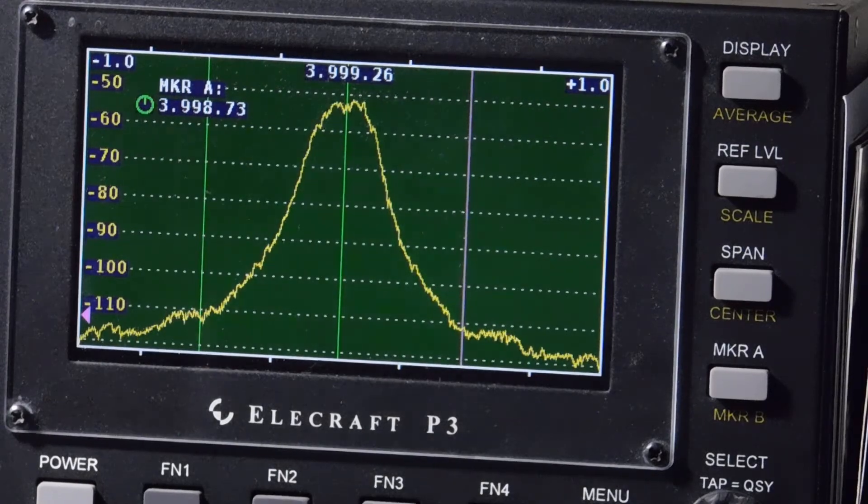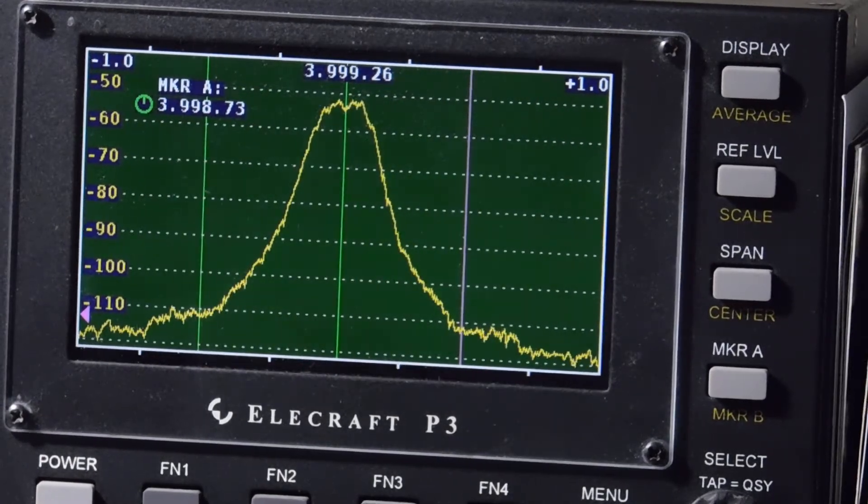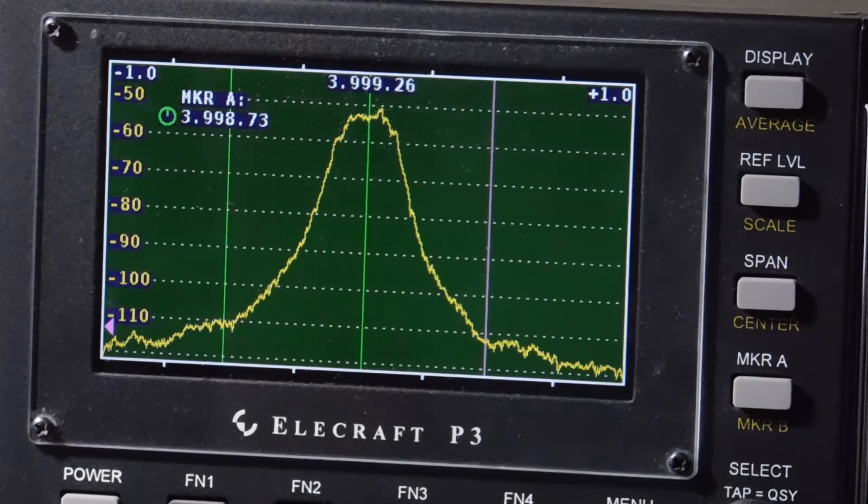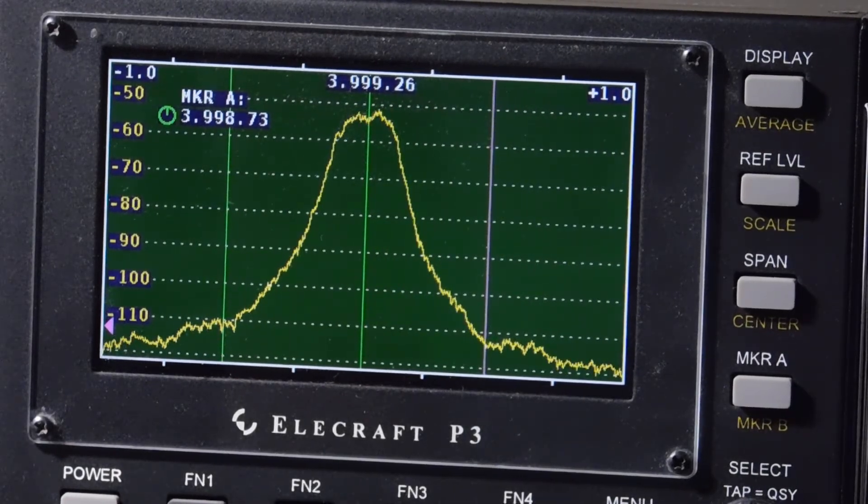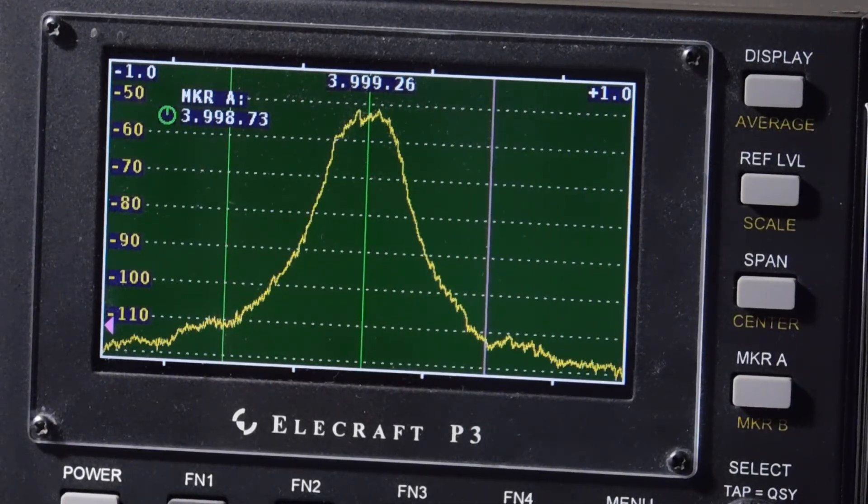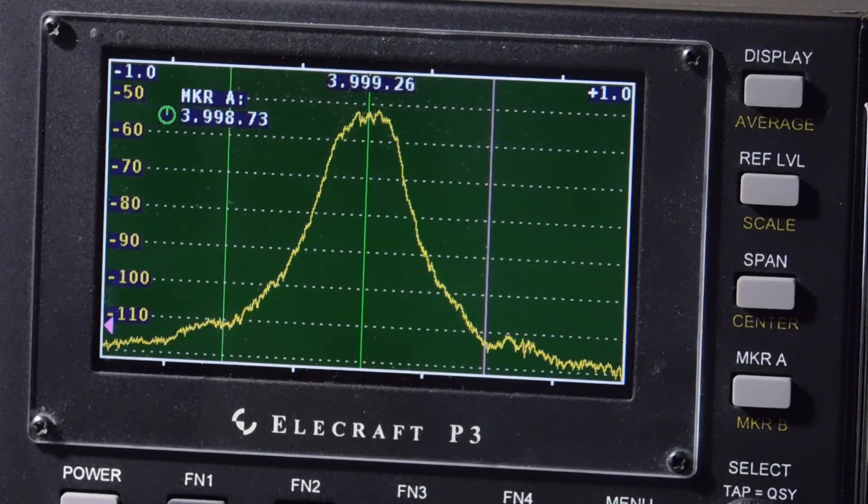So anyway, that's the crystal filter IF for the UCR homebrew CW 40 meter transceiver. And 73 and keep on tinkering.